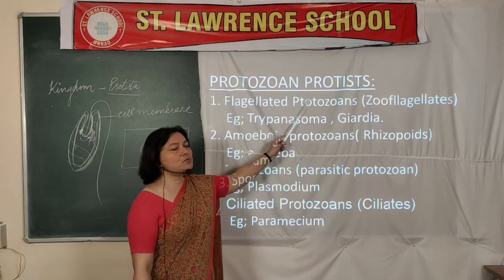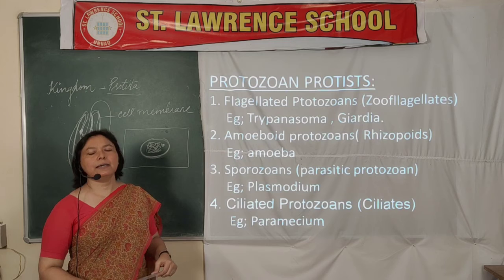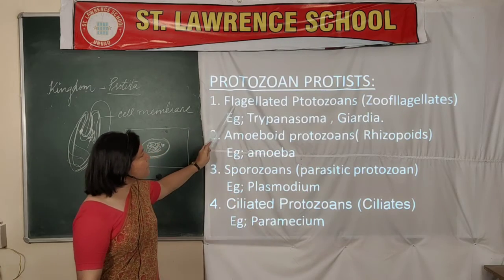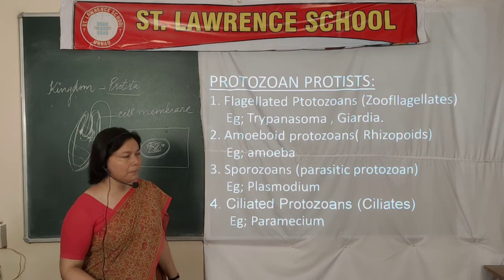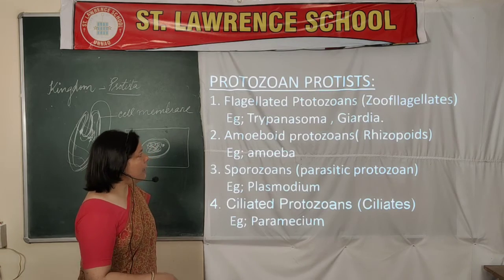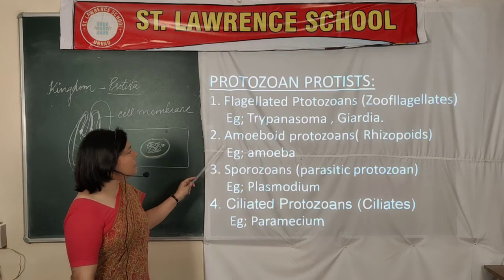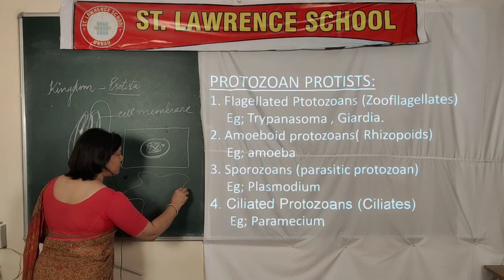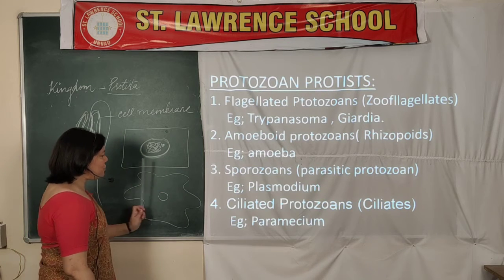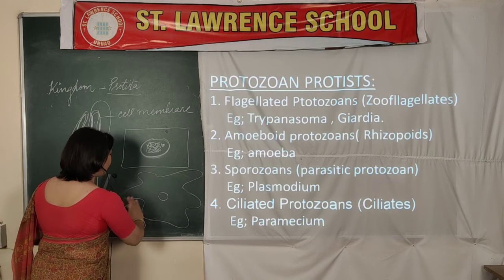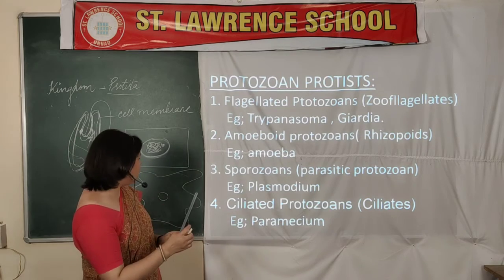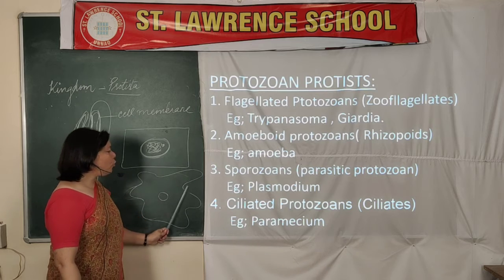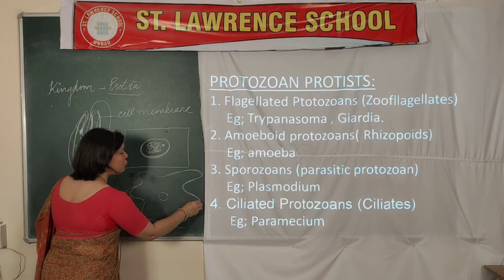The next category is Protozoan Protists, which are different from slime molds and photosynthetic protists. The first sub-category is Flagellated Protozoans — as the name says, they bear flagella. Examples are Trypanosoma and Giardia. The second sub-category is Amoeboid — having an amoeba shape that can change direction anywhere. The arms, or pseudopodia, can extend to any side. Example is Amoeba, and their main locomotory structure is pseudopodia — false feet.